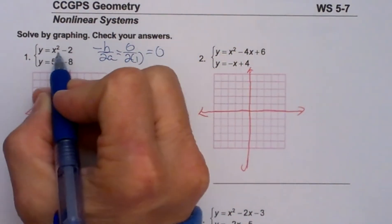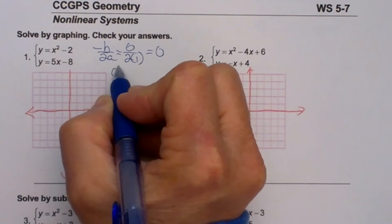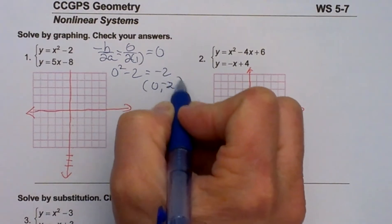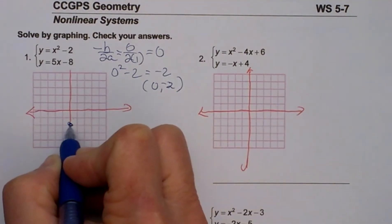So when x is 0, what is my output? My output is negative 2, so 0, negative 2 is my vertex. So let us plot that 0, negative 2.